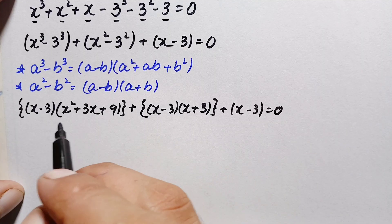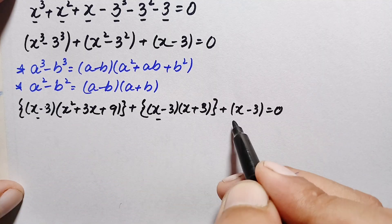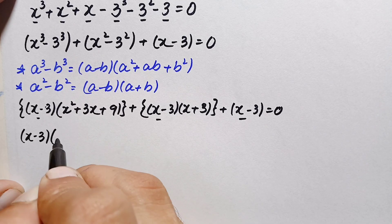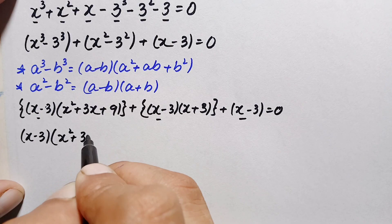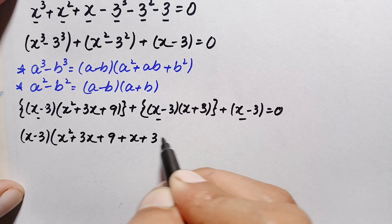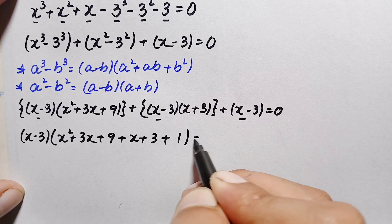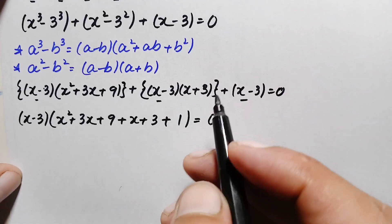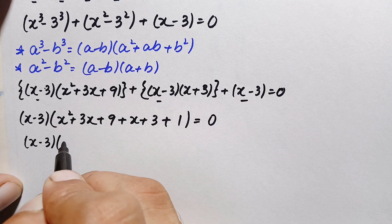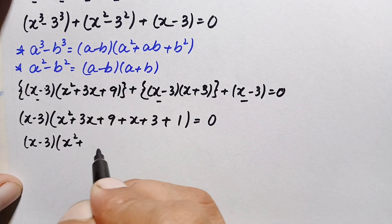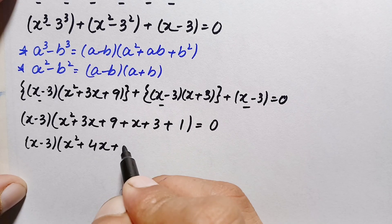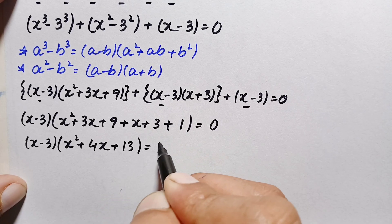Since (x minus 3) is common to all three terms, we factor it out. This gives (x minus 3) times (x squared plus 3x + 9 + x + 3 + 1) equals 0, which simplifies to (x minus 3)(x squared plus 4x plus 13) equals 0.